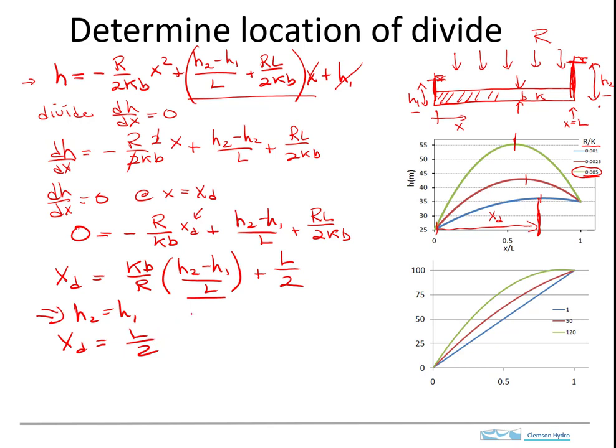If the heads on the two sides are equal, then the divide is always going to be in the middle, and we saw that on the previous analysis where we plotted it up. We can see then that if H2 and H1 are not equal, and if H2, the head out here, if that's greater than H1, then this will always be positive.